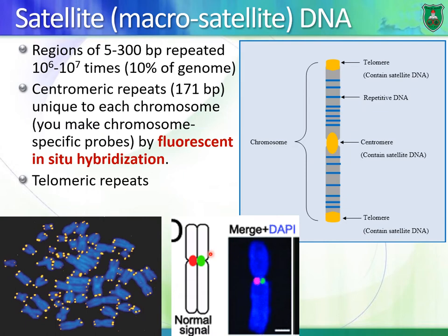Centromeres are really important in meiosis and mitosis, in separating chromosomes during cell division and the cell cycle. You also have macro-satellites in telomeric repeats. Telomeres are located at the ends of chromosomes and are also made of repeated sequences.